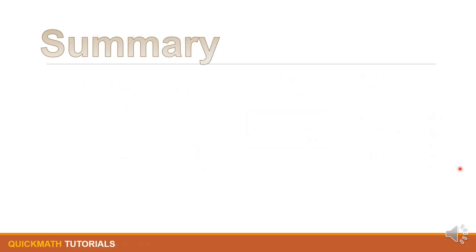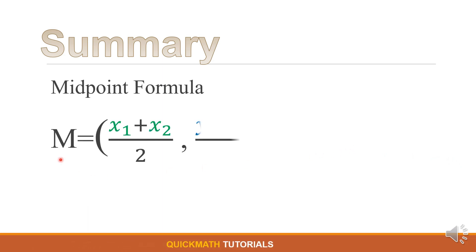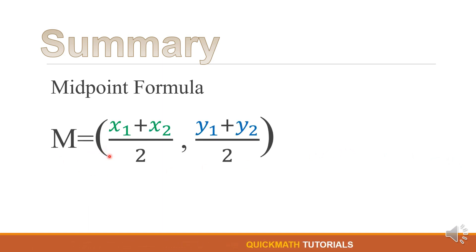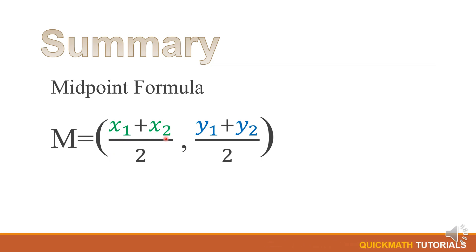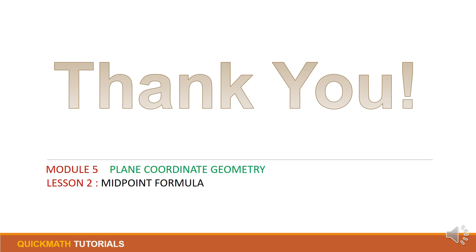To sum it up, always remember this midpoint formula: M is equal to open parenthesis x sub 1 plus x sub 2 over 2, comma, y sub 1 plus y sub 2 over 2, close parenthesis. That ends our quick math tutorial.